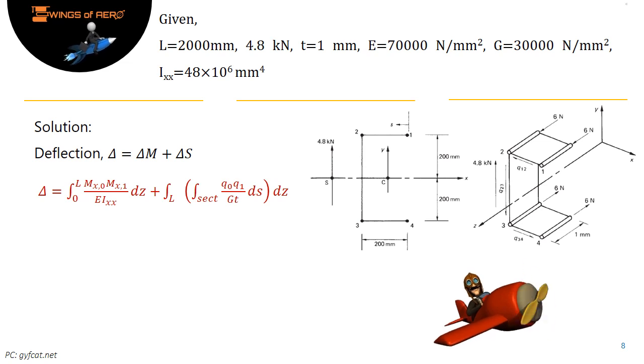Deflection Δ = ΔM + ΔS. The first term is bending deflection and the second term is shear deflection, where z is measured from the built-in end of the cantilever. First, find the bending deflection ΔM.